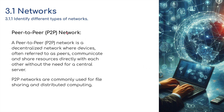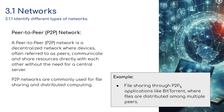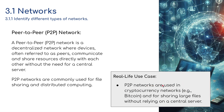A peer-to-peer network is a decentralized network where devices — often referred to as peers — communicate and share resources directly with each other without the need for a central server. Someone might have something installed on their computer and share it with somebody else's computer without that file going through a server — it's installed on one person's hard disk and copied to another's. Peer-to-peer networks are commonly used for file sharing and distributed computing. An example is BitTorrent, where files are distributed among multiple peers. Peer-to-peer networks are also used in cryptocurrency networks such as Bitcoin.